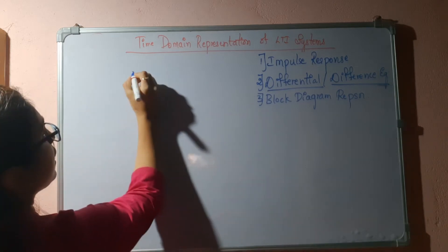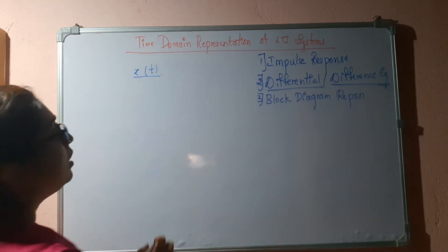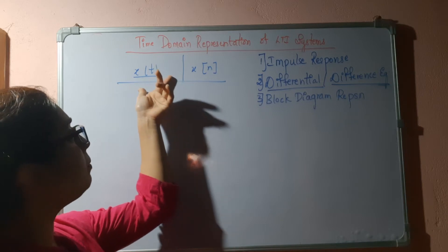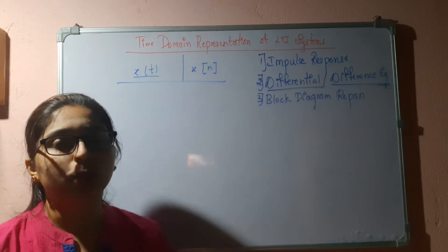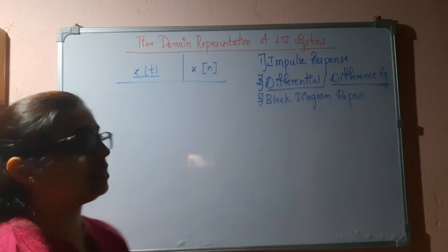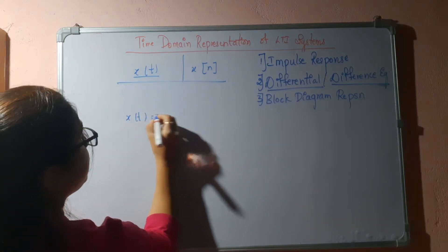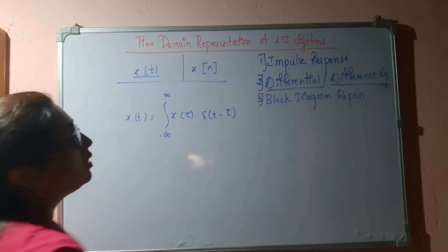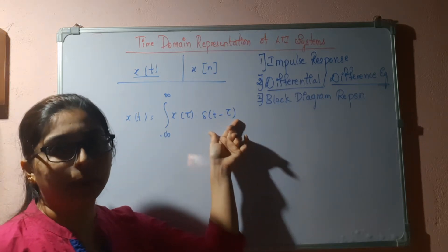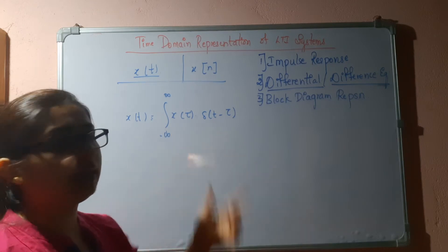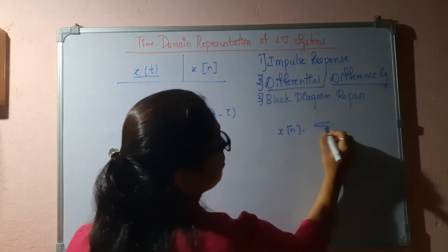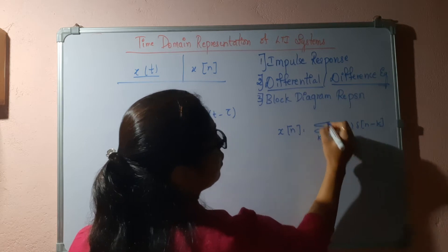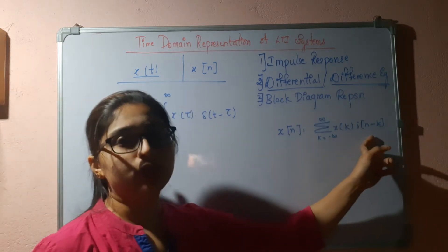Consider any arbitrary input signal x(t), or x(n) in terms of the discrete time system. This signal can be expressed as the weighted superposition of time-shifted impulses. That means x(t) equals the integral from minus infinity to infinity of x(τ) δ(t − τ) dτ — this is nothing but a shifted impulse. Any signal can be represented this way. In terms of the discrete time system, it is x(n) = Σ x(k) δ(n − k), summed from k = minus infinity to infinity. These are your time-shifted impulses.